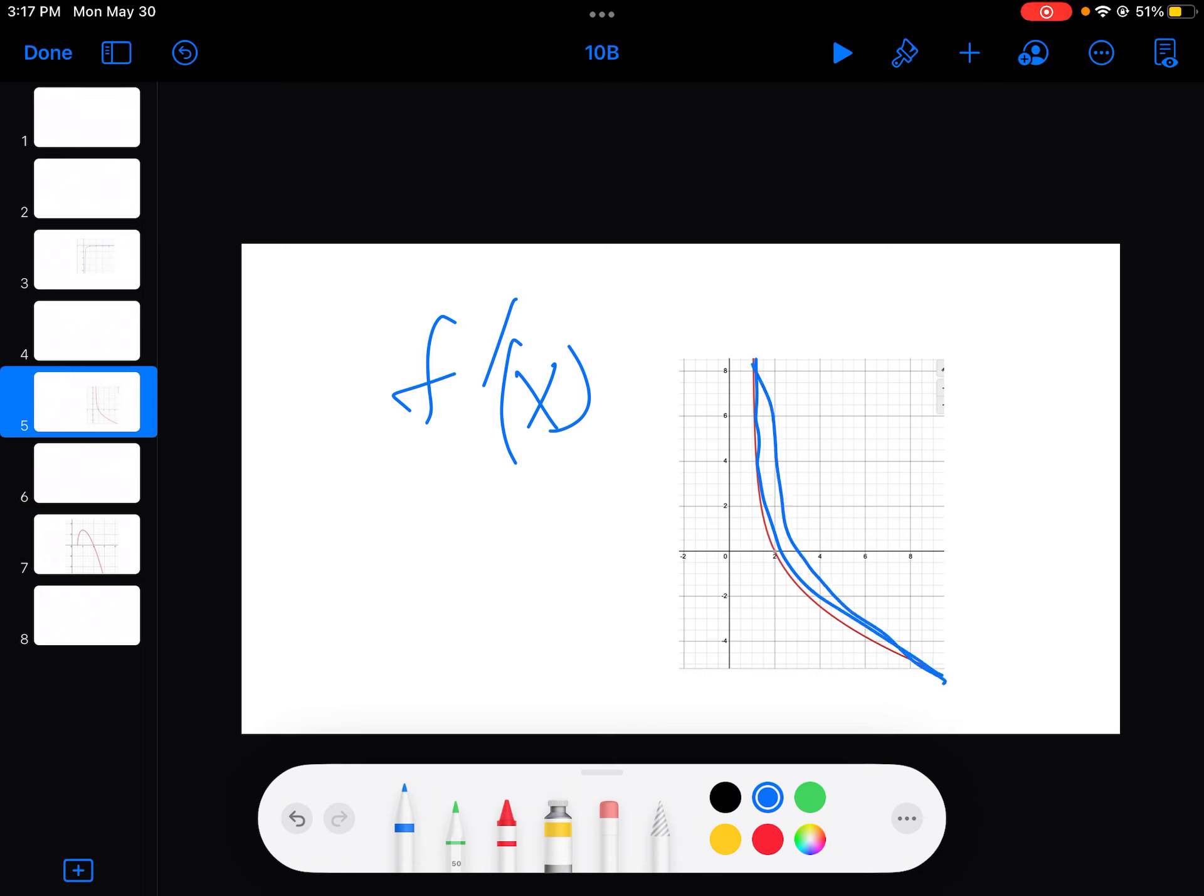And if the slope of F prime is always negative, that means the slope of the original function is always going from, is always becoming less positive.